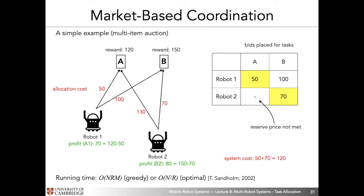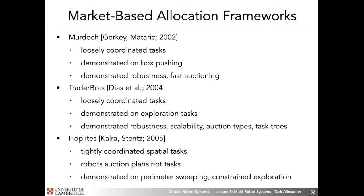One of the benefits of market-based coordination schemes is flexibility in implementing the underlying mechanism. There are differences in choices: greedy is computationally more efficient than optimal but may not lead to optimal assignments. Market-based coordination can be implemented in decentralized as well as centralized manners. Various research papers have proposed different instantiations of market-based allocation mechanisms showing different properties, implementing them on simulated or real robot systems.